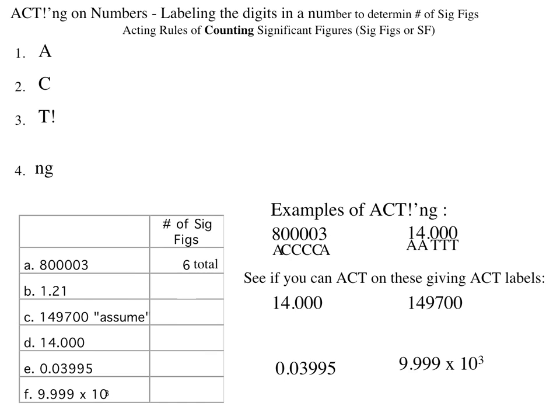See if you can act on these numbers giving ACT labels. And then you can check your work. The first example was already done for you. But let's consider this 149,700 assume number. The non-zero digits are significant, and the trailing zeros are not significant because the number does not contain a decimal point. This number only has 4 significant figures.